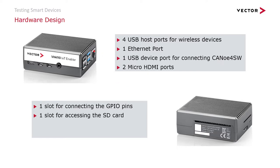The IoT Enabler has a small metal case with different ports available. Most importantly, you have three USB host ports for connecting your wireless devices and one Ethernet port. There is also one USB device port, which is used to connect the IoT Enabler to Canoo for software. Additionally, there are two HDMI ports for connecting a display.